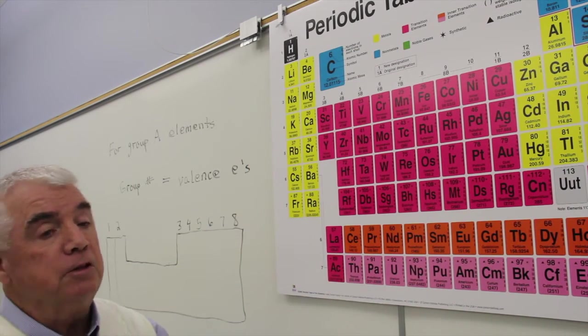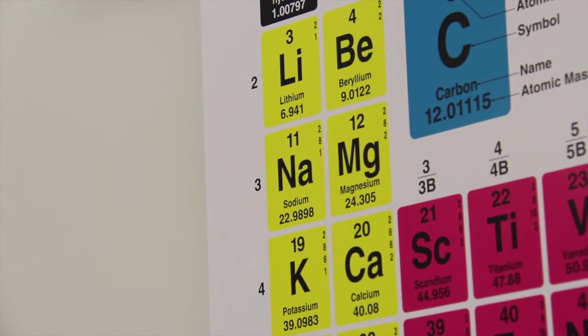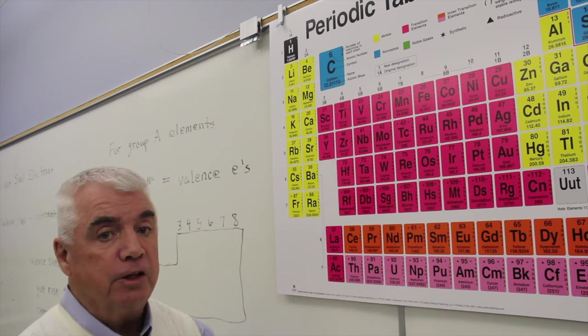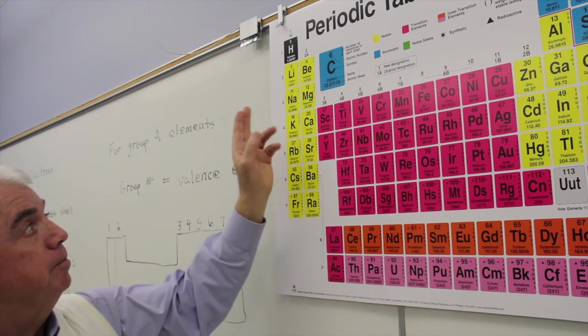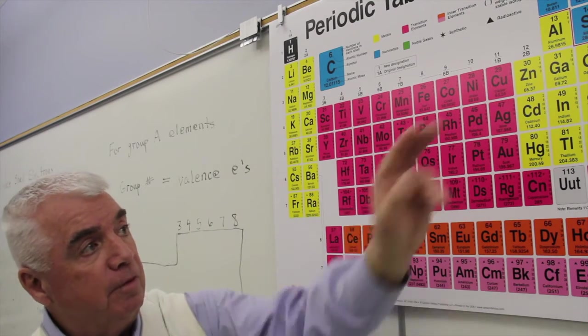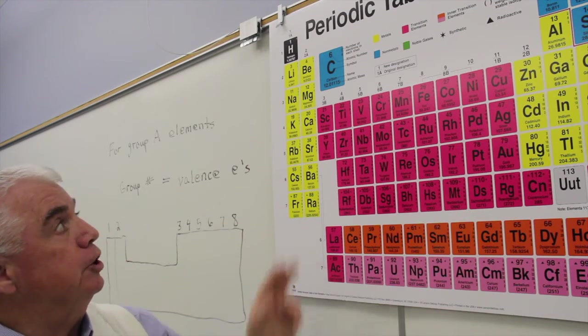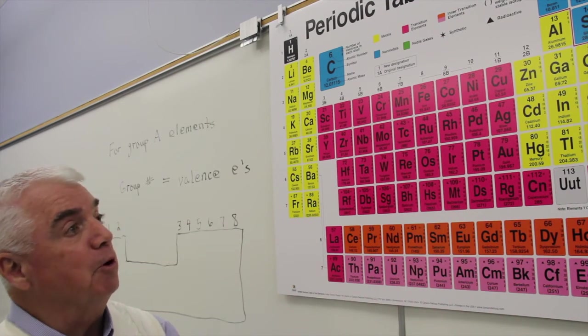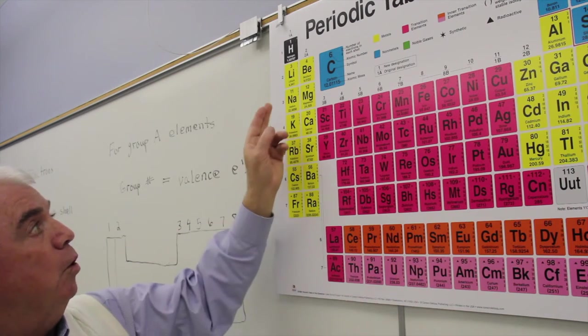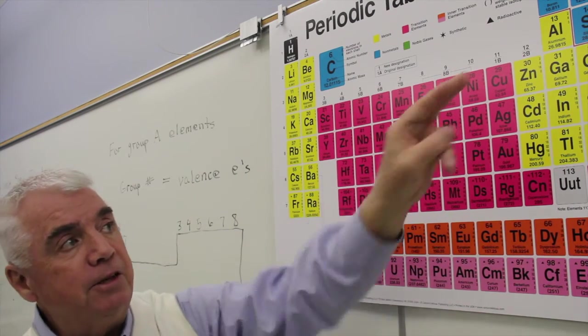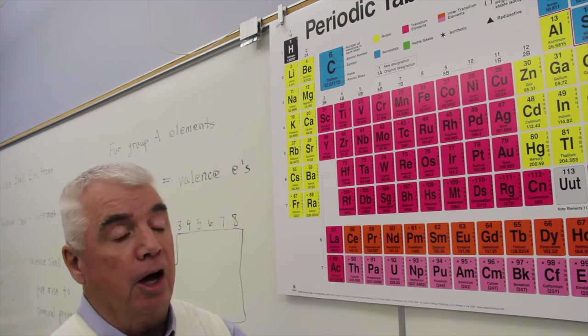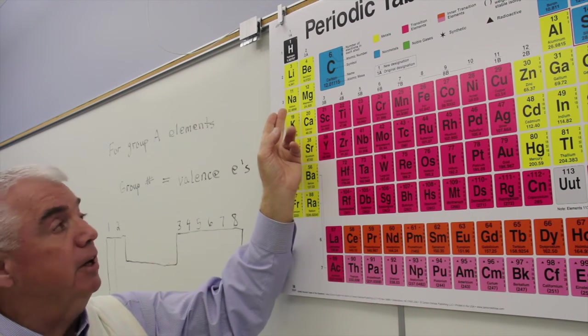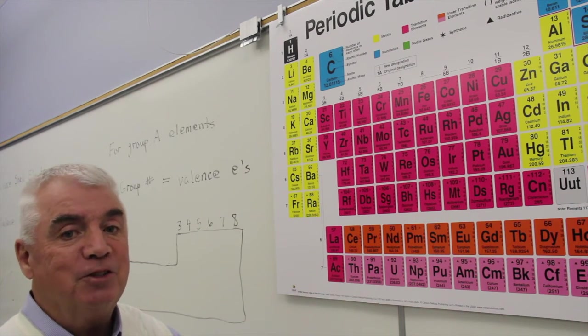If we look at element number 11, sodium. Sodium has 11 total electrons, but it's in column 1A, so it has one valence shell electron. And it'd like to have eight outermost electrons. Well, it could gain seven and be like argon, but seven is an awfully big number of electrons to gain. Or if it lost one, then it's back to the noble gas configuration of neon.